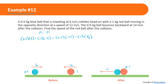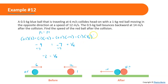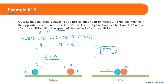Simplifying the math: 0.5×6 plus 1×(−12) gives us negative 9 on the left side, equal to 0.5×(−14) plus 1×v, which gives negative 7 plus the velocity of the red ball. Adding 7 to both sides: negative 2 equals the velocity of the red ball. Since the question asks for speed, the answer is 2 meters per second.